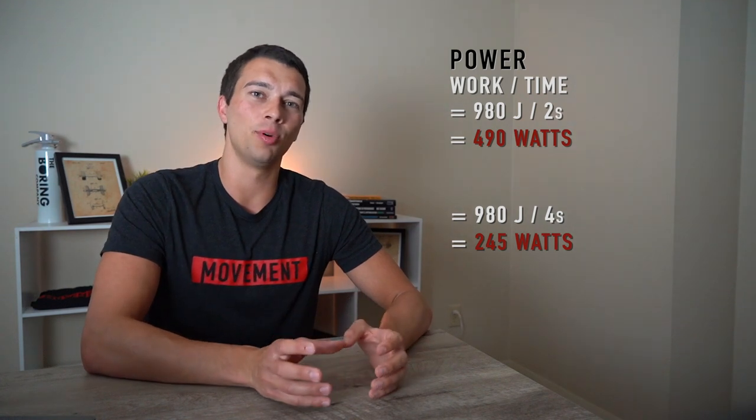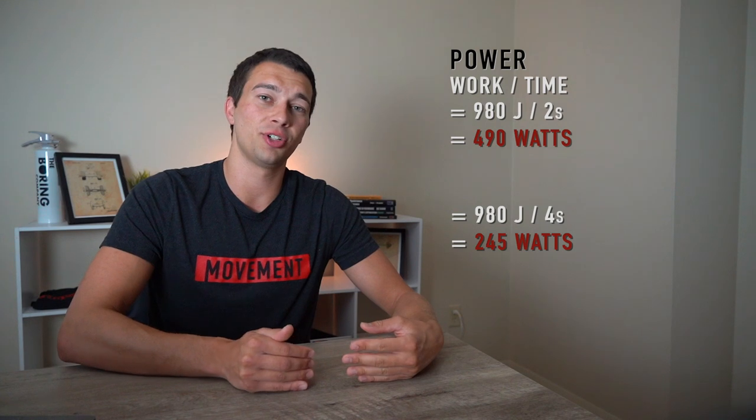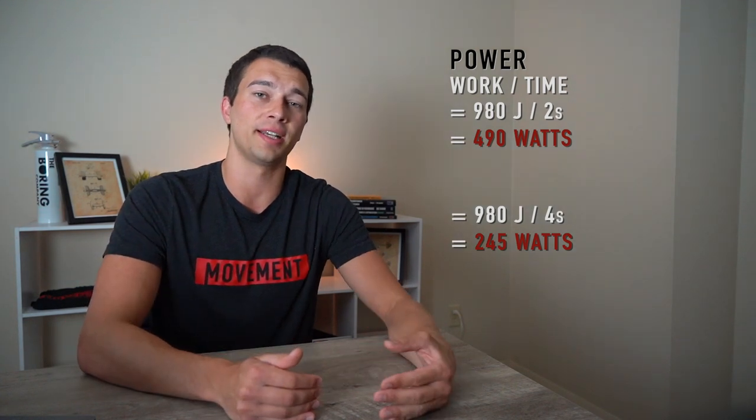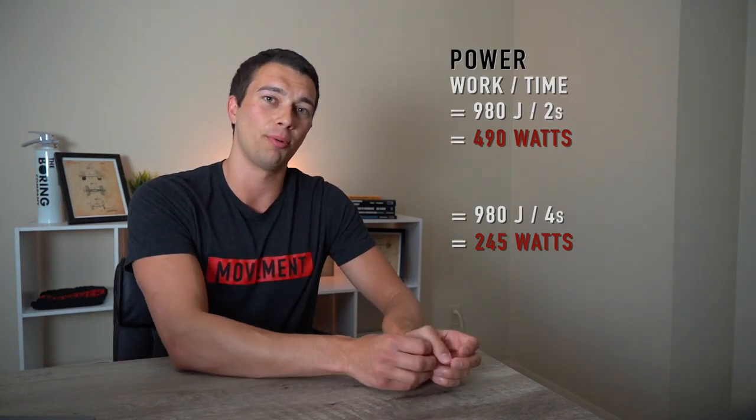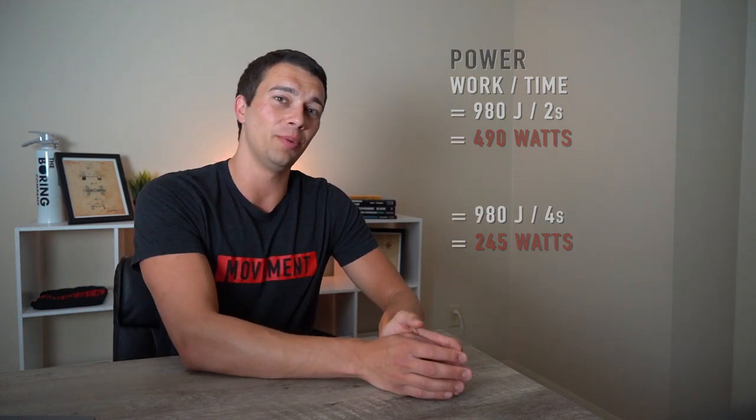So what you can see from this example is doubling the speed of the squat, doing the concentric in two seconds versus four seconds, doubles the power output. We have 245 watts versus 490 watts. So there are a number of training variables that we can manipulate to maximize power, force, or work.